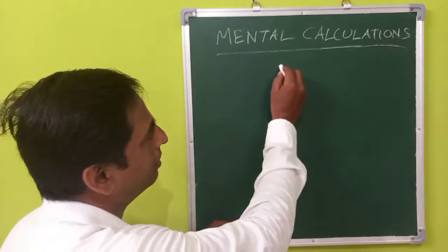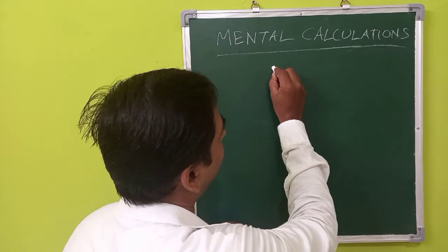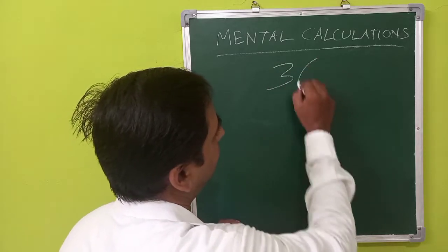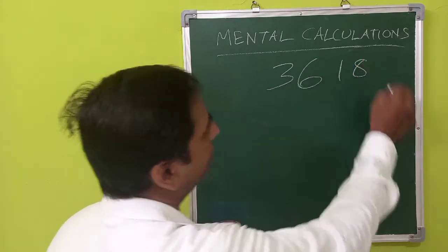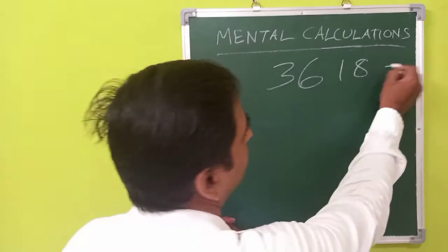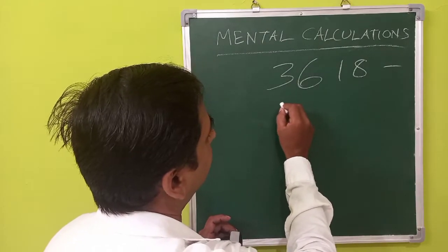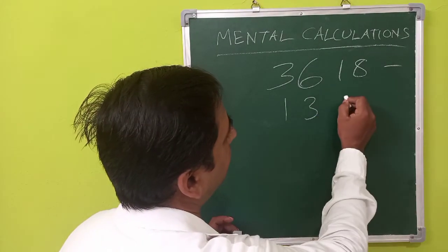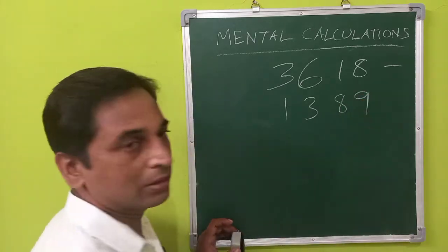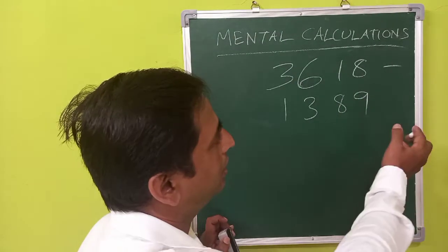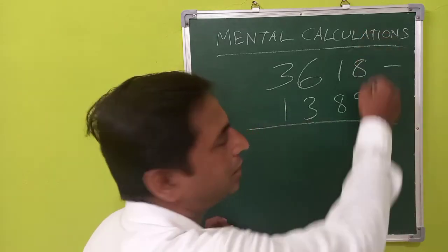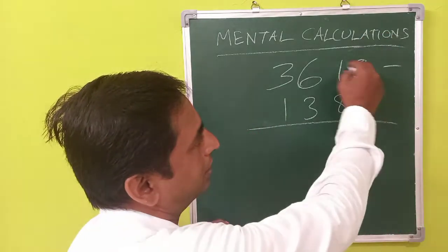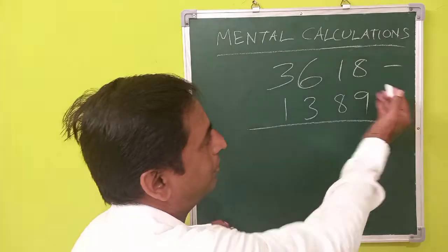Okay, then this can be applied to subtraction as well. So let's say 3618, you need to subtract 1389 from this. So how do you do traditionally? You will be doing the subtraction starting from the right.